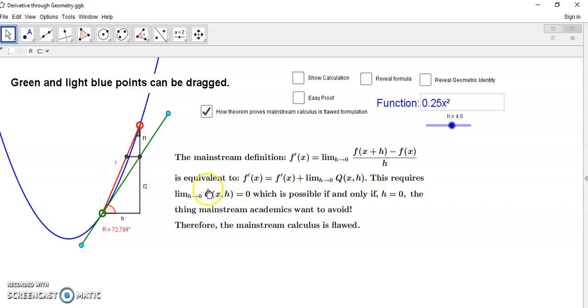Do you understand that this non-parallel secant line that Newton used in his experiments will ensure that this difference in slopes is never zero? If you look at the secant line, it's not even defined at the point of tangency. So there's no way that you can have h equal to zero, which means that Q of xh is always greater than zero. This is the very thing that mainstream academics want to avoid and claim that they are avoiding falsely. Therefore mainstream calculus is flawed.